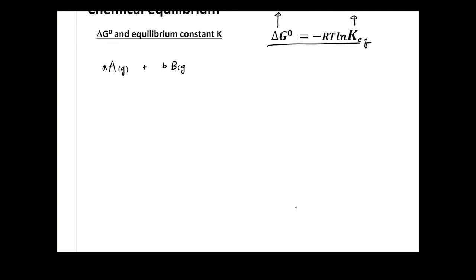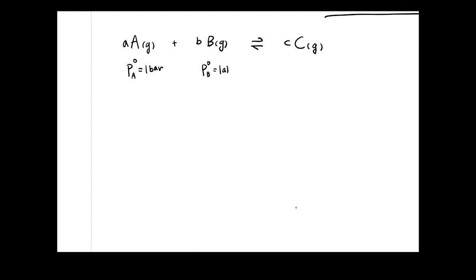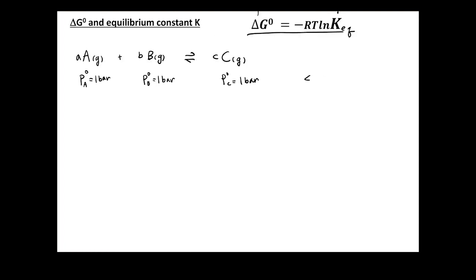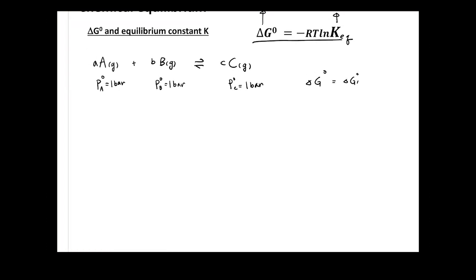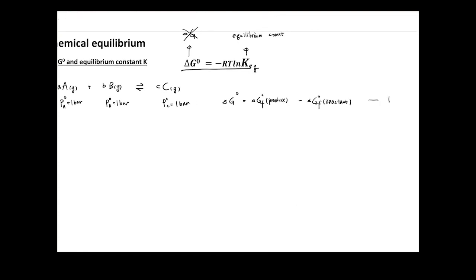Let's start from the very simple equation: A (gas) + B (gas) → C (gas). Assuming we start from standard condition, the pressure of A equals one bar, pressure of B also equals one bar, and the same for C. From here we can write out ΔG°, where ΔG° can be calculated from the ΔG° of formation of your product minus ΔG° of formation of reactants. This is equation number one.